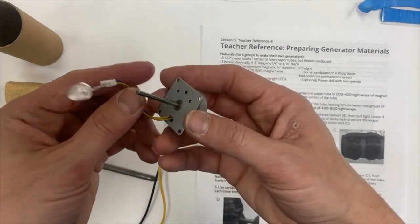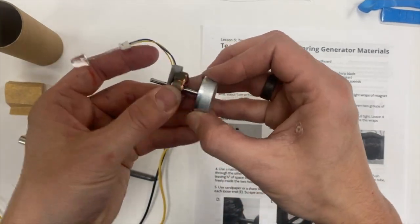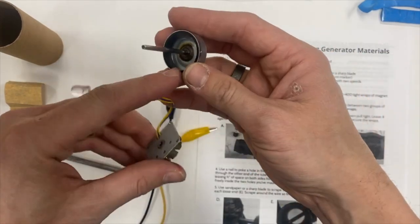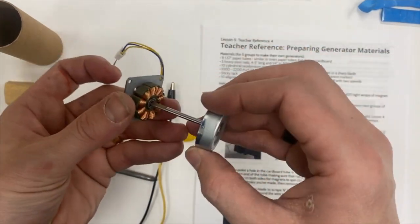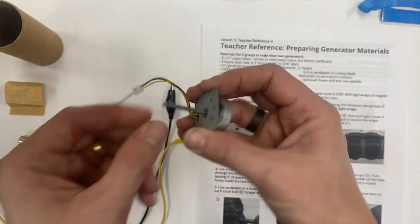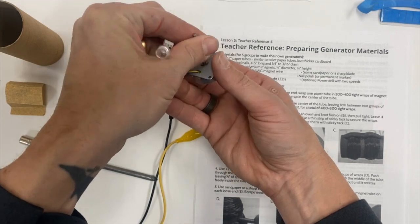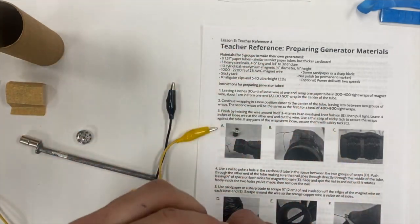This is coming right after we have dissected this generator in class and we noticed it had some copper wire, and this piece here is a magnet. If we spin them against each other we can light an LED, so we're wondering if we can do that using similar materials but making them ourselves.